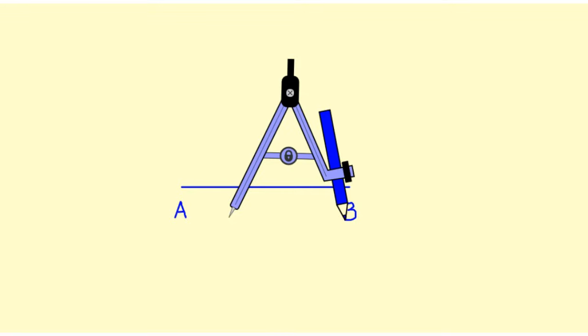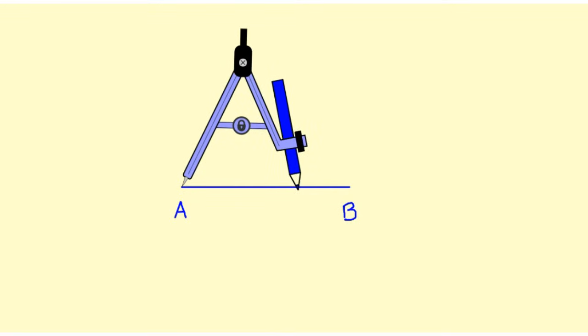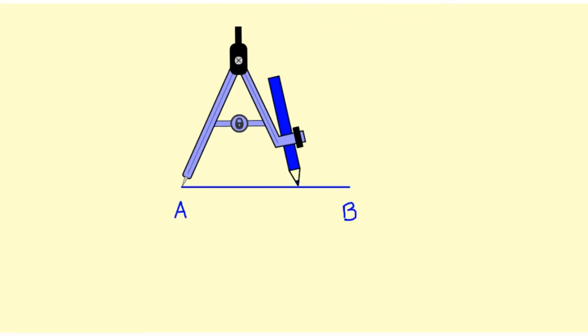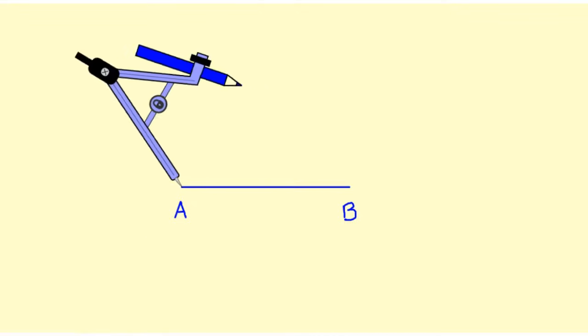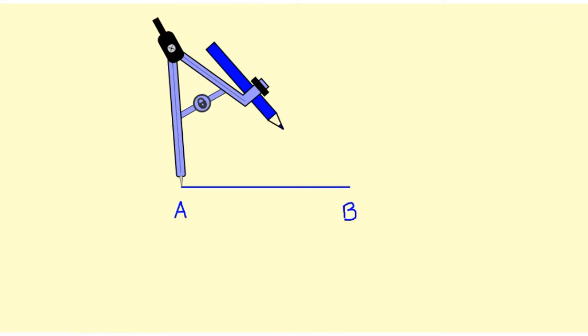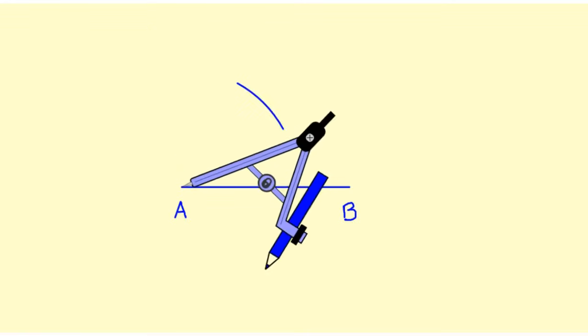To do that, I'm going to take my compass and put the point of the compass on point A. I'm going to open my compass so that it is more than halfway to point B, and then I'm going to make an arc above and then rotate the compass and make an arc below.